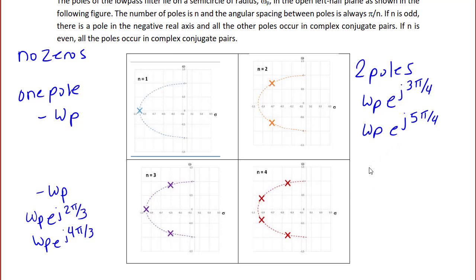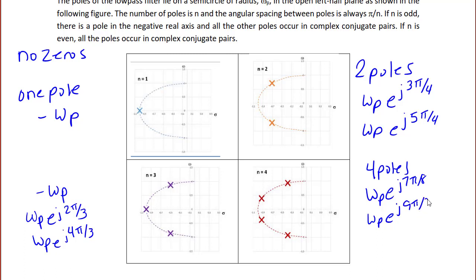For n=4, the second complex conjugate pair is at ωp·e^(j5π/8) and ωp·e^(j11π/8). So there are four poles total, all equally spaced in two conjugate pairs.